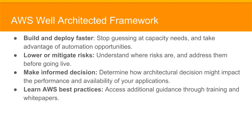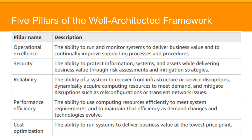You can make informed decisions by determining how architectural decisions might impact the performance and availability of your applications. You can learn AWS best practices by accessing additional guidance through training and white papers. The five pillars of the Well-Architected Framework are operational excellence, security, reliability, performance efficiency, and cost optimization, each of which will be covered in detail.